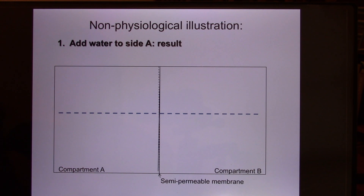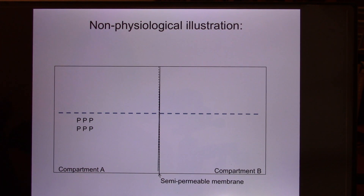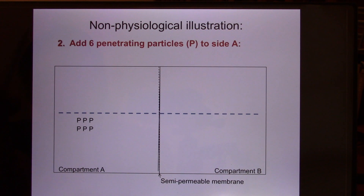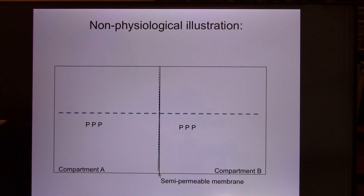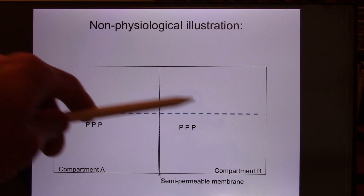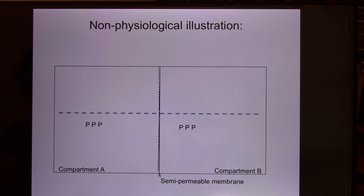Now let's add solid — we add penetrating particles. We put six penetrating particles on one side and wait a few minutes. From the previous lecture, you learned every molecule wants to go down the concentration gradient, from high concentration to low concentration. The cell membrane is semi-permeable, but since this is a penetrating particle, it will move through. Diffusion stops when there is no concentration gradient. So both sides end up with equally distributed water and equal concentration.